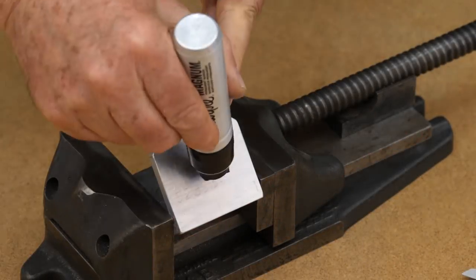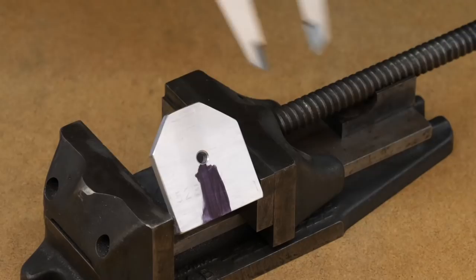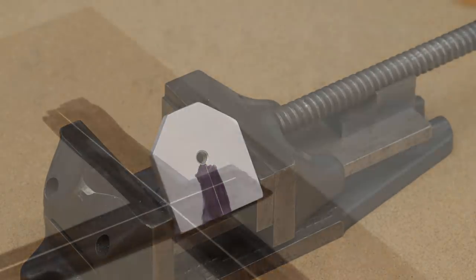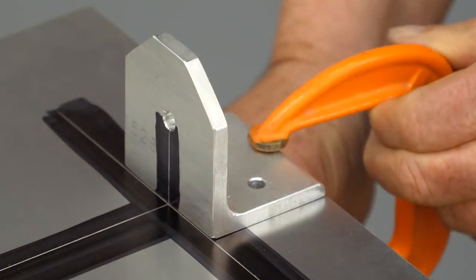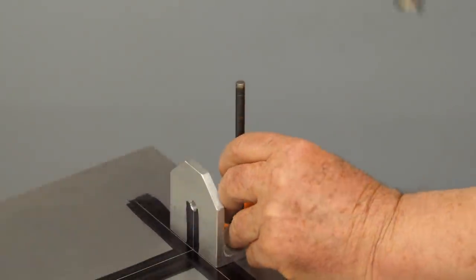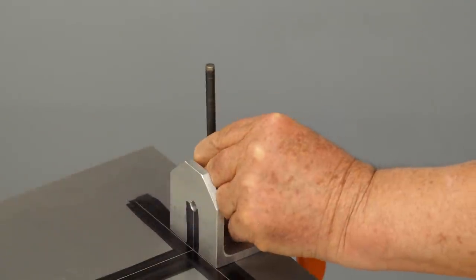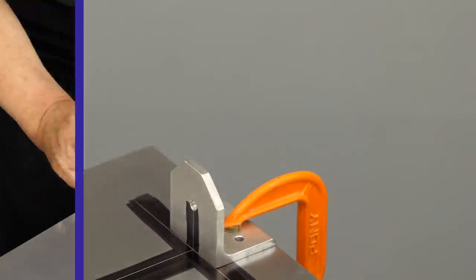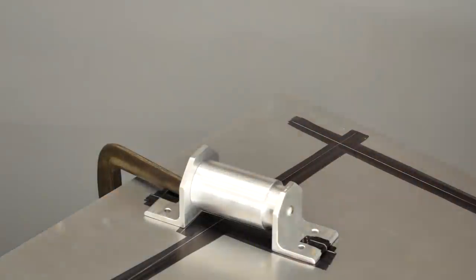I need to make center lines on each of the angle brackets so I can accurately position them on the fixture. Next, the angle brackets are clamped into place. Then a transfer punch is used to mark the center of the bolt holes in the angle brackets and the mark is center punched.